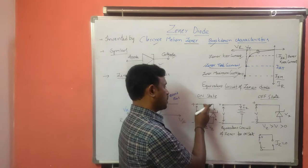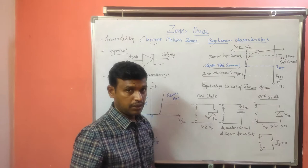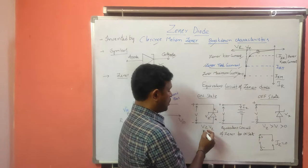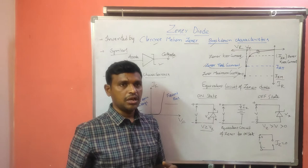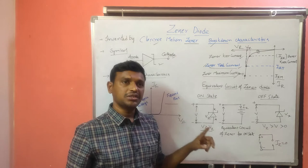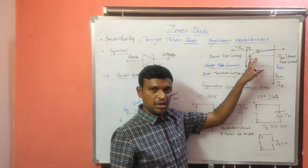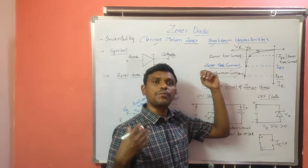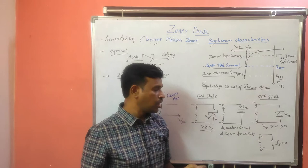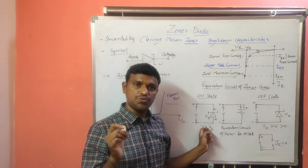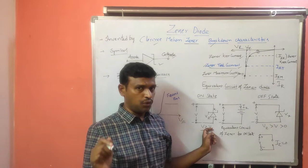The GINA diode is operated in reverse bias condition. When the applied voltage V is greater than or equal to the junction breakdown voltage VZ, then that state is called the ON state. At that condition, more current will flow through the GINA diode.